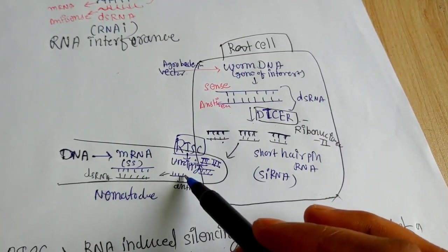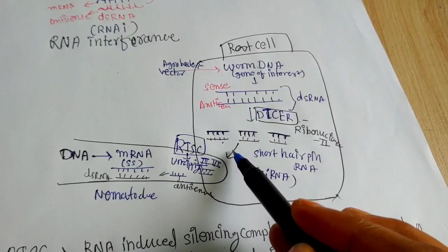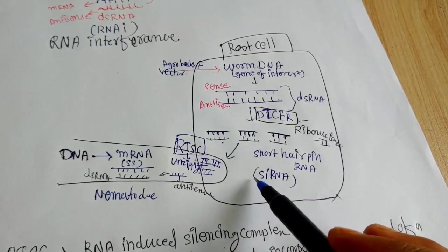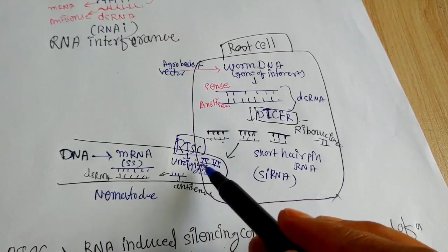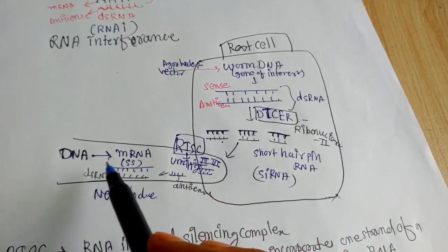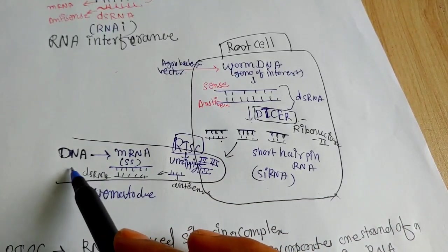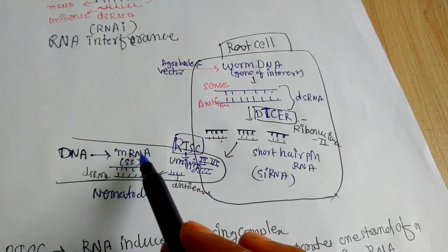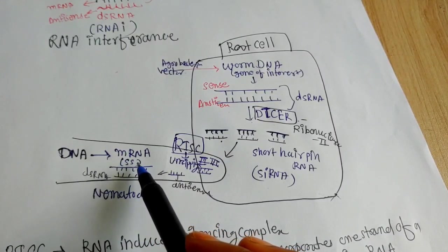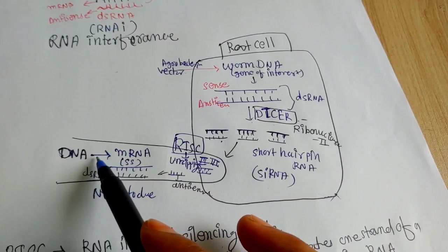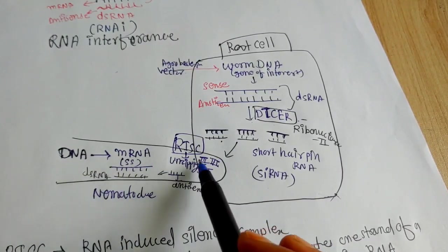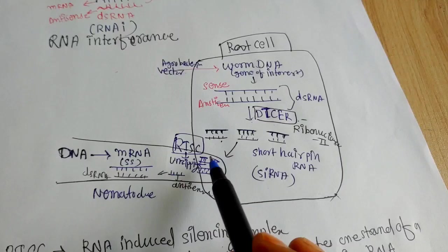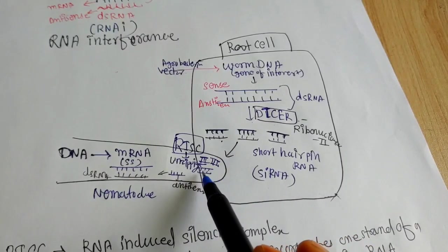So when the nematode will infect the root cell, these small interfering RNAs, siRNAs will enter into the nematode. And you know that the nematode is also having DNA. So this will produce mRNAs, single-stranded mRNAs by the process called transcription. And here we have the small interfering RNA also.